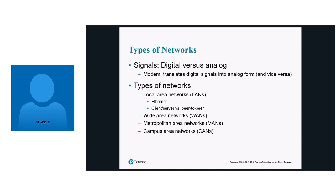There'll likely be an exam question on types of networks. We have local area networks, which are confined to one building. We have wide area networks, like at Greystone where we connect 18 locations into one. We have a metropolitan area network, where we connect two or more locations in one city — think Ernst & Young or Citibank in New York City with many offices on one network. And lastly, a campus area network — like FoxNet, or Amazon or Facebook's campus — where all buildings connect to one router before going out to the internet.